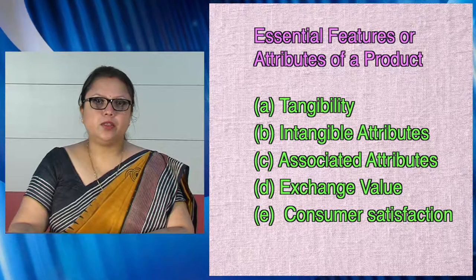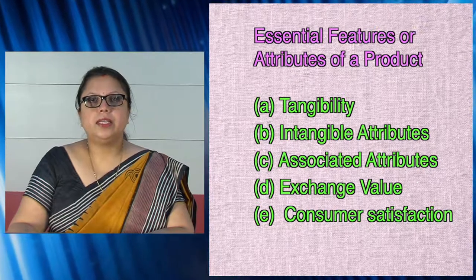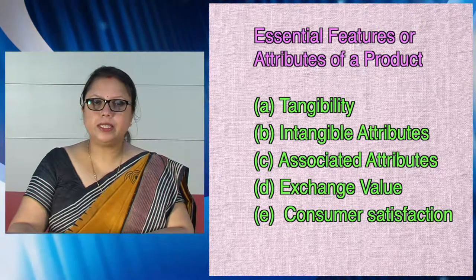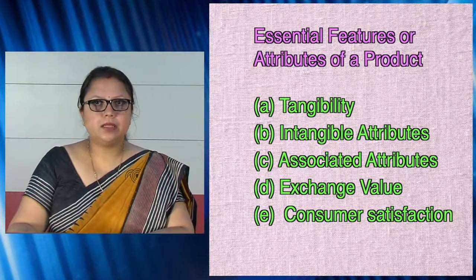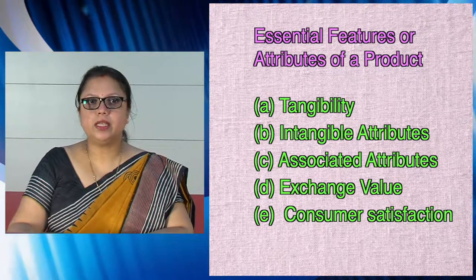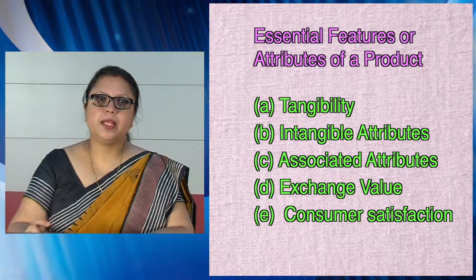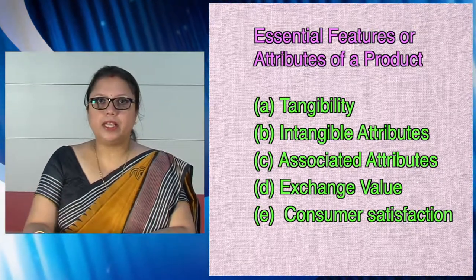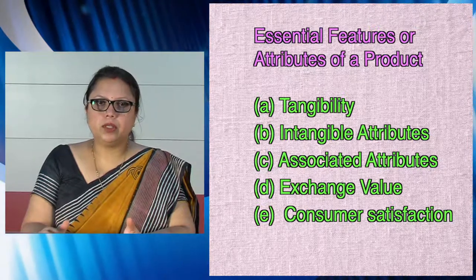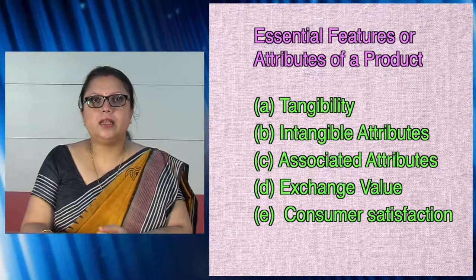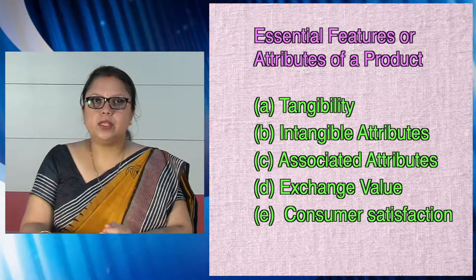The product may also be intangible in the form of services. For example, insurance, banking, hotel service, hospitality service — all these things we cannot touch but we can feel the service. That is the intangible characteristic of the product. Then comes associated attributes: a product may have a number of features which differentiate it from competitor products. Associated attributes usually cover color, packaging, branding, etc. When we go to market and compare a product with a competitor's product, features like packaging that we prefer are known as associated attributes.